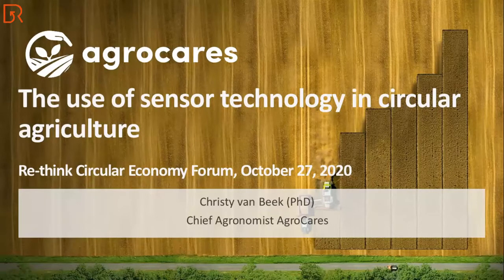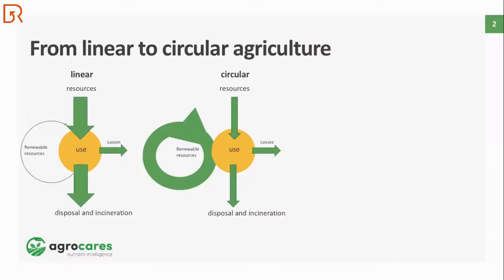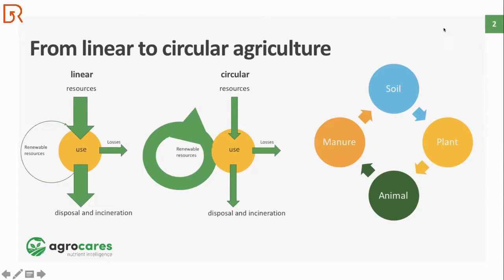I will talk about the use of sensor technology in circular agriculture. My name is Chris van Beek, and I work as a chief agronomist at AgroCares. When we talk about shifting from linear to circular agriculture, we go from a linear system of disposal and incineration to a circular system with much more use of renewals. In agriculture, this is often seen as a circularity of soil, plant, animal, and manure. Plants take nutrients from the soil, convert it into biomass, which is consumed by animals who produce manure, the manure is applied to the soil, and so on — that, in a sense, is a circular system.